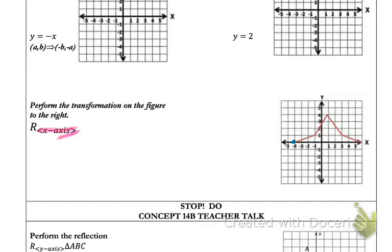negative 1, 1, 1, 4, 3, 1, and it's kind of faded, but 6, 0. And I'm going to reflect those points over the x-axis. When I do this, two of my points are not going to move. Negative 4, 0, and 6, 0 are going to stay the same because they're on the line of reflection.